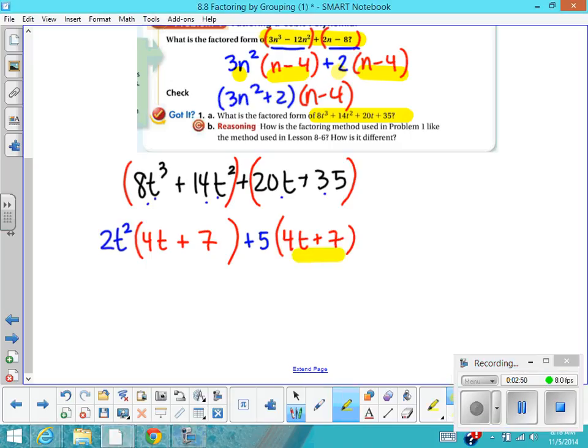So I'm going to say that's times the quantity of 4t + 7, and these two things agree.